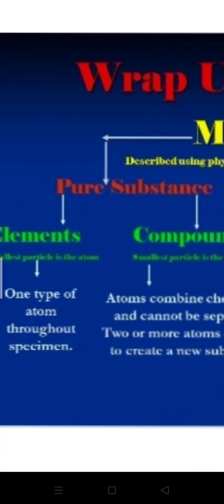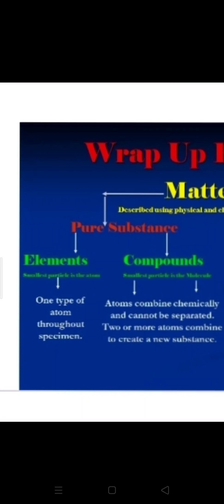There are two types of pure substance: elements and compounds. The smallest particle of elements is the atom, and the smallest particle of compound is the molecule. Elements consist of one type of atom throughout a specimen.